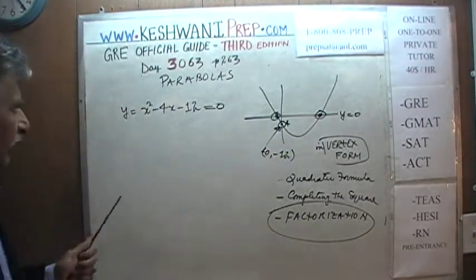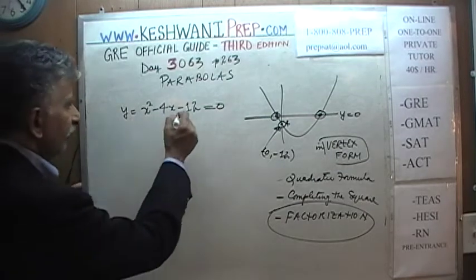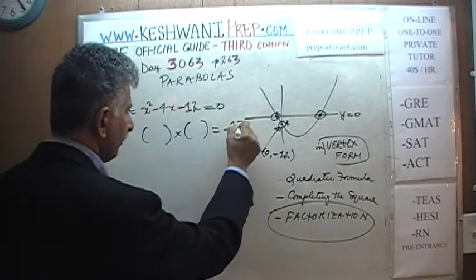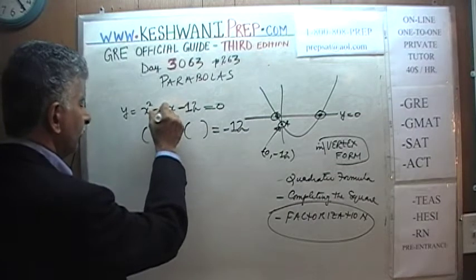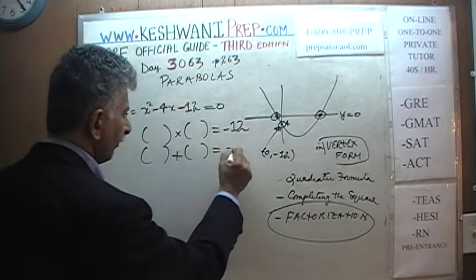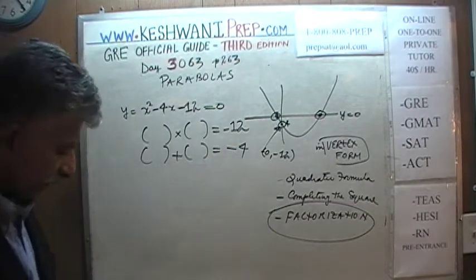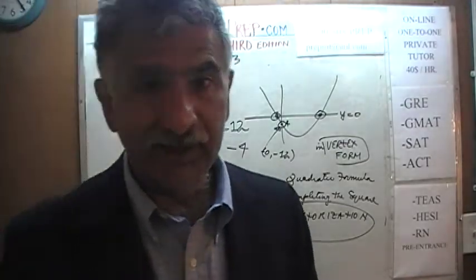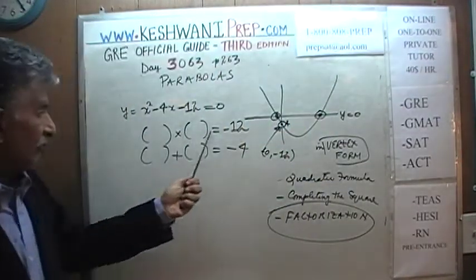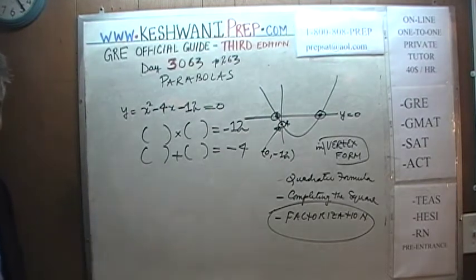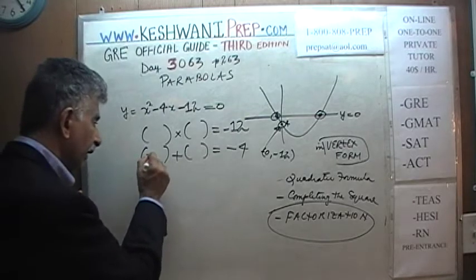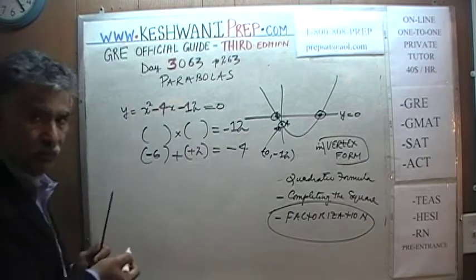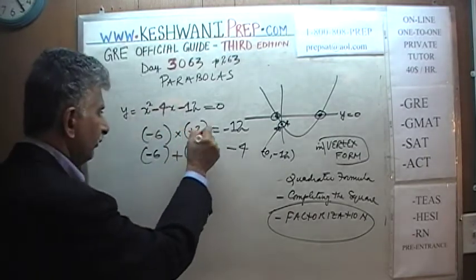Finding the x-intercept requires more work. We are looking for two numbers whose product is -12 and whose sum is -4. Those two numbers are -6 and +2: their product is -12 and they sum to -4.